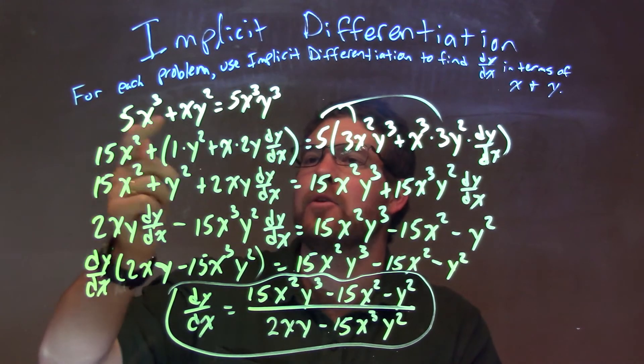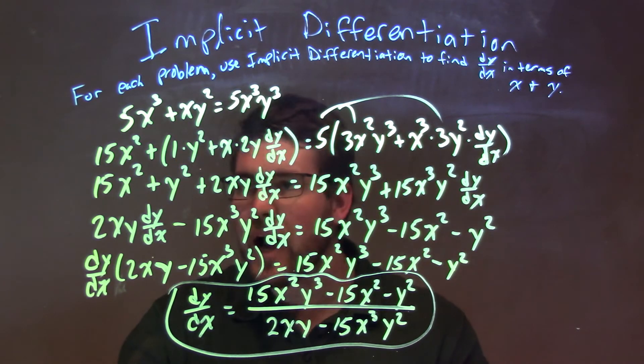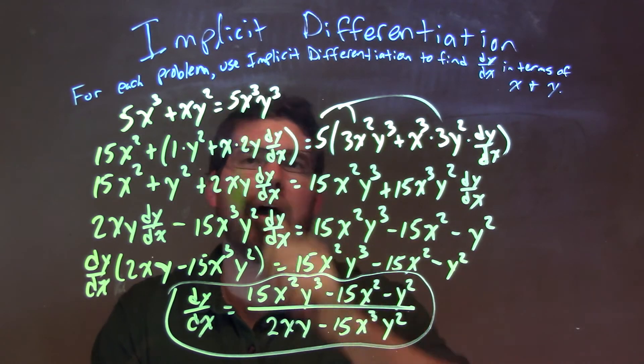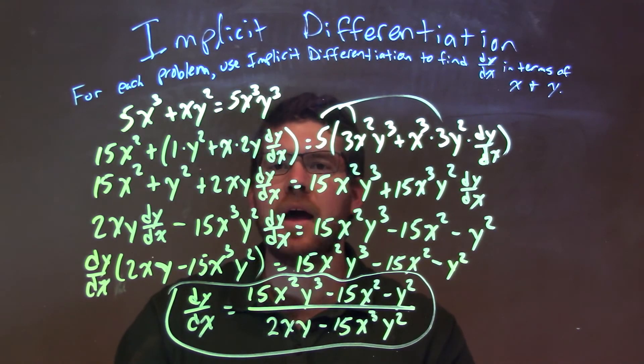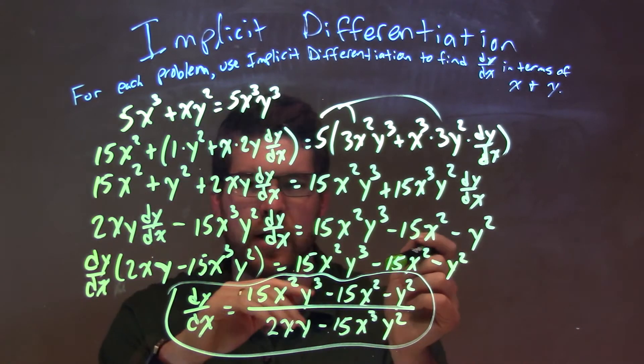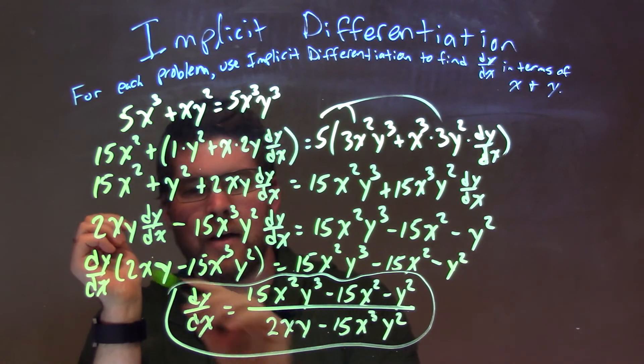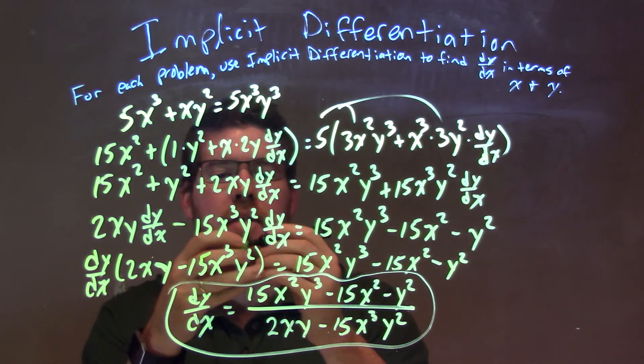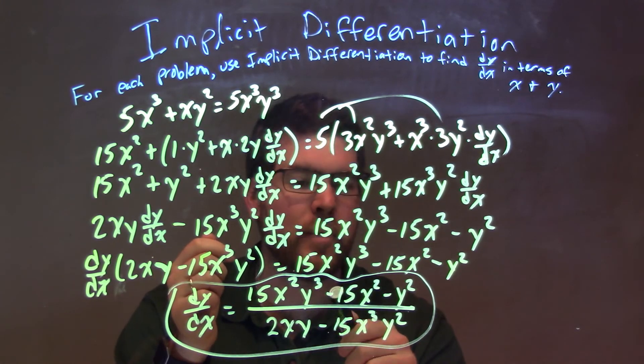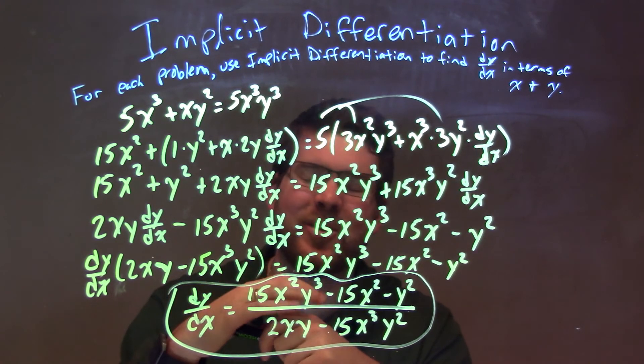So, let's recap. We're going to 5x to the third plus xy squared equals 5x to the third times y to the third. When I derive this, the main thing I look for is the product rule of the xy squared, and the same thing here with the x to the third and y to the third. Then, I kind of simplify it, then I've got all my dy/dx's there. Anything that's attached to the left-hand side, everything else to the right. Then I pull that out of dy/dx from this part here, and then divide it what was left on the inside there, that parenthesis. That I left with my final answer of dy/dx is equal to 15x squared y to the third minus 15x squared minus y squared over 2xy minus 15x to the third y squared.